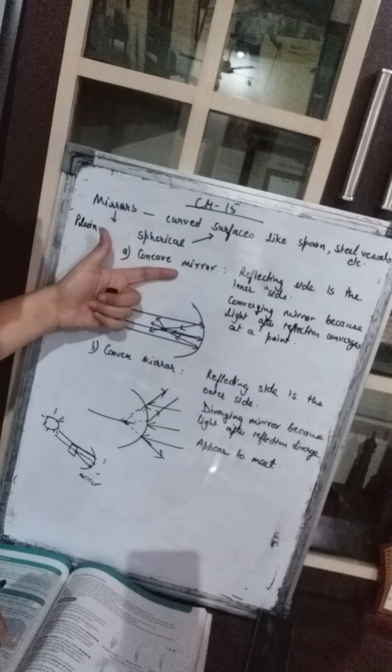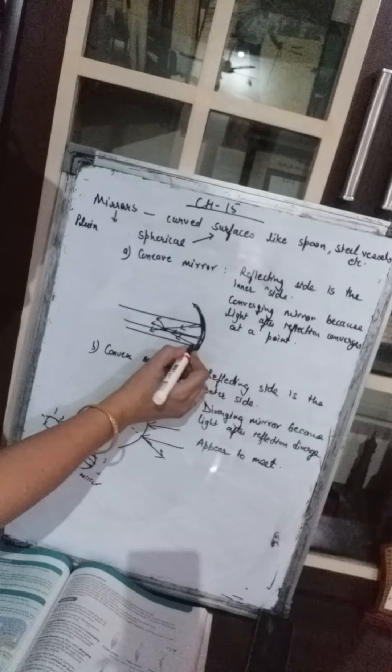One is a concave mirror and one is a convex mirror. A concave mirror is a mirror in which the reflecting side is the inner side. Here, this is a spherical curved-surface mirror where the reflecting side is the inner side — light has to fall on this side to get reflected. It is also called a converging mirror because the light, after reflection, meets at a point — it converges at a point.